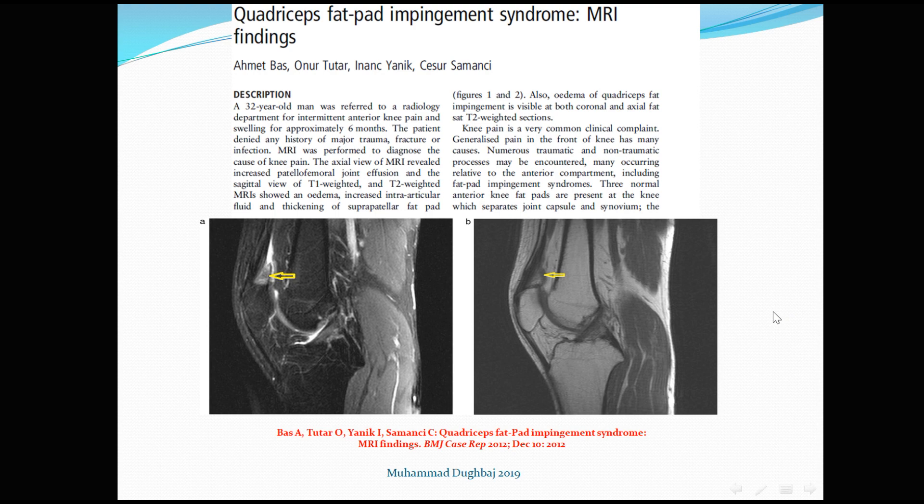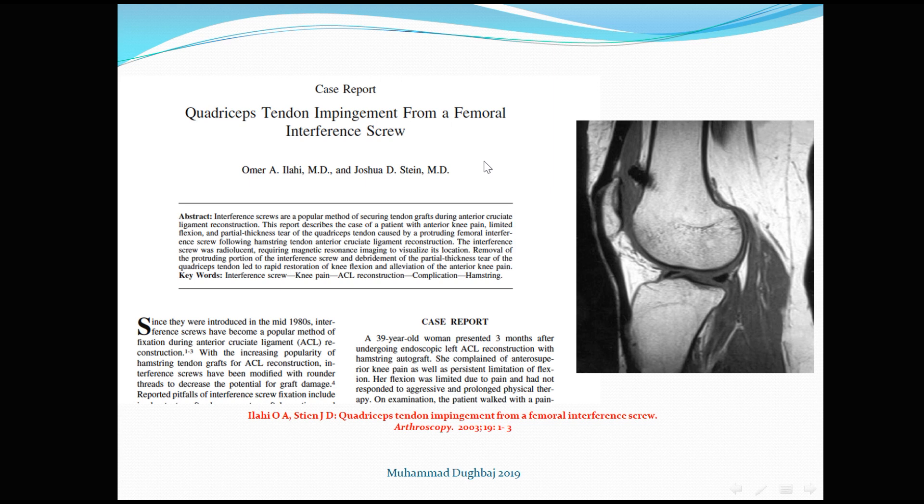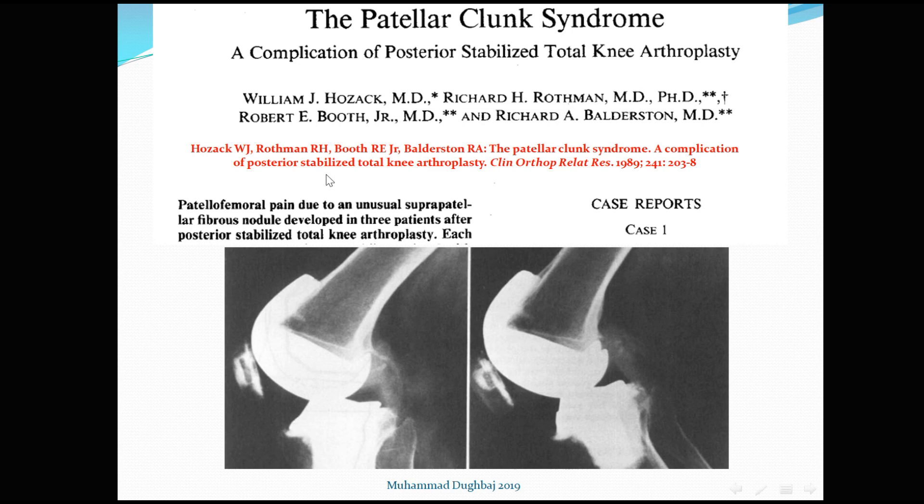The case of quadriceps tendon impingement from a femoral interference screw shows the screw compressing the suprapatellar fat pad, pre-femoral fat pad, and the quadriceps tendon. The other reported case involves formation of a fibrous nodule that developed in three patients after posterior-stabilized knee arthroplasty.